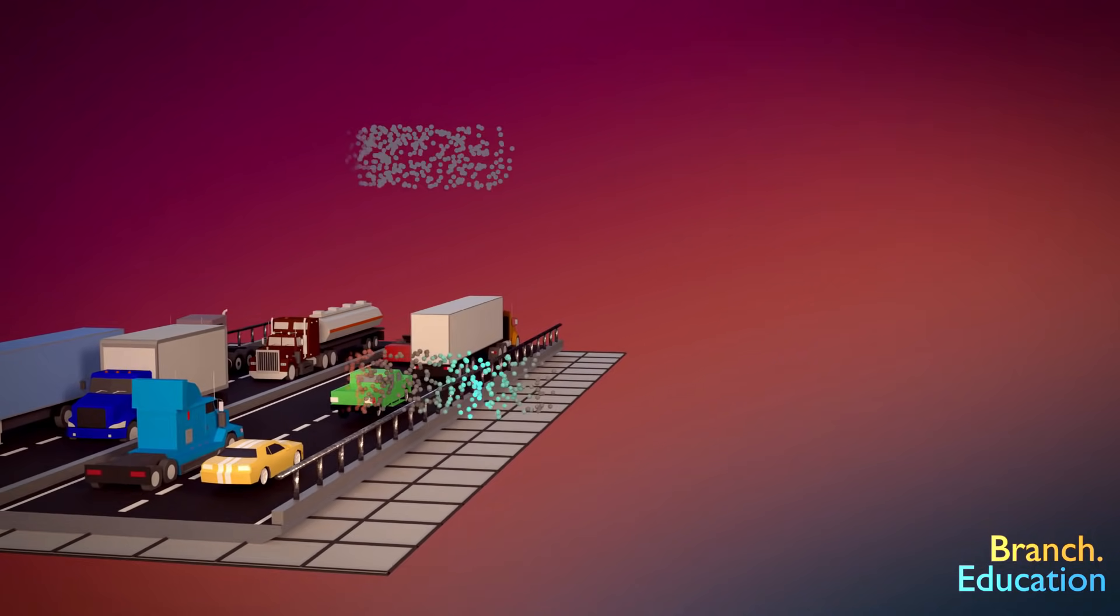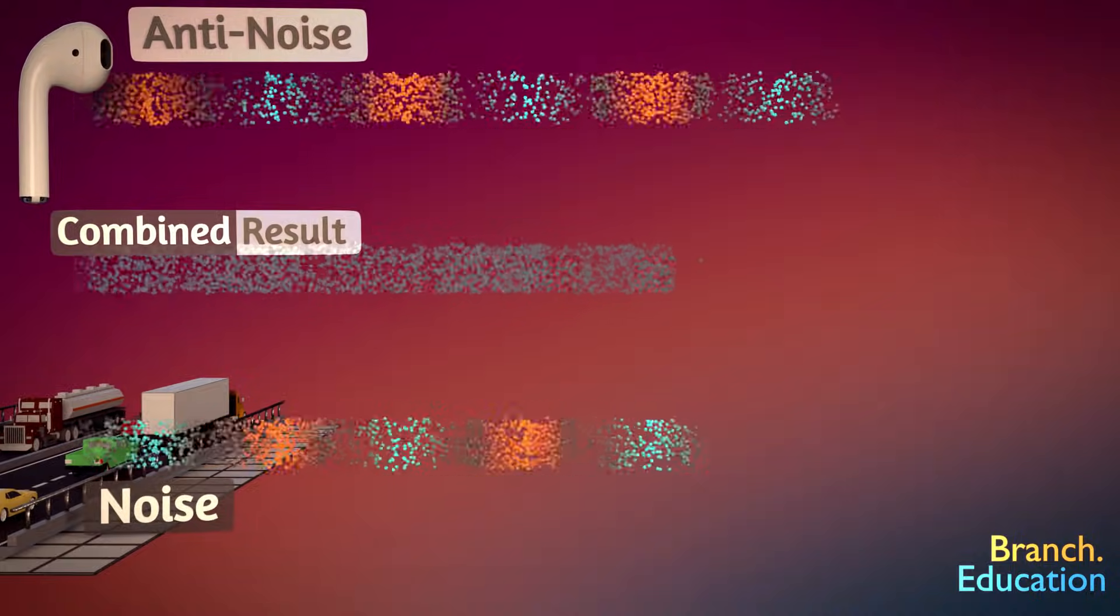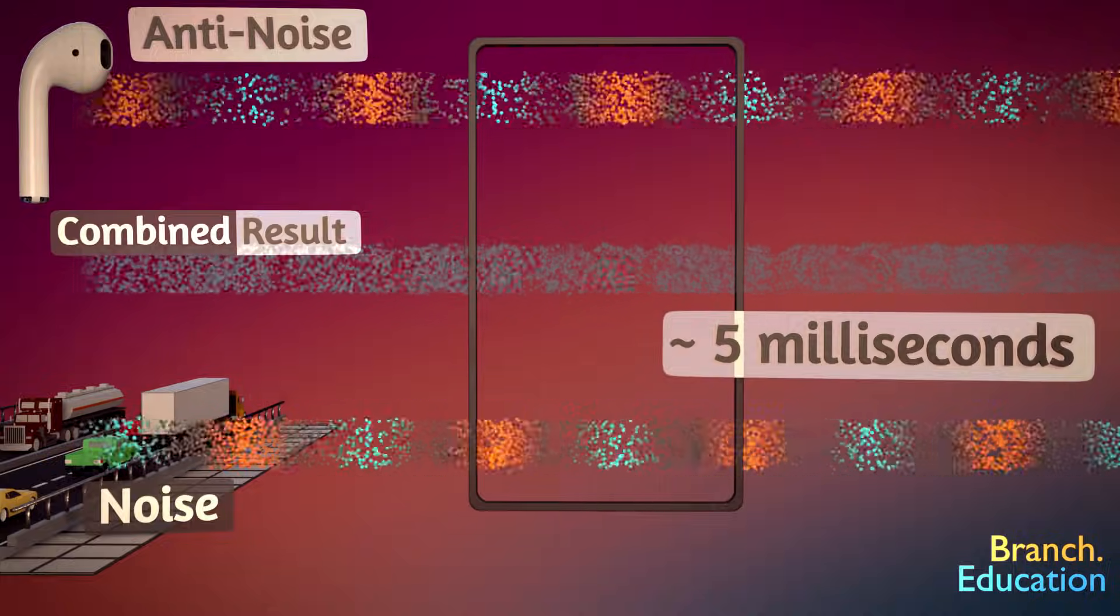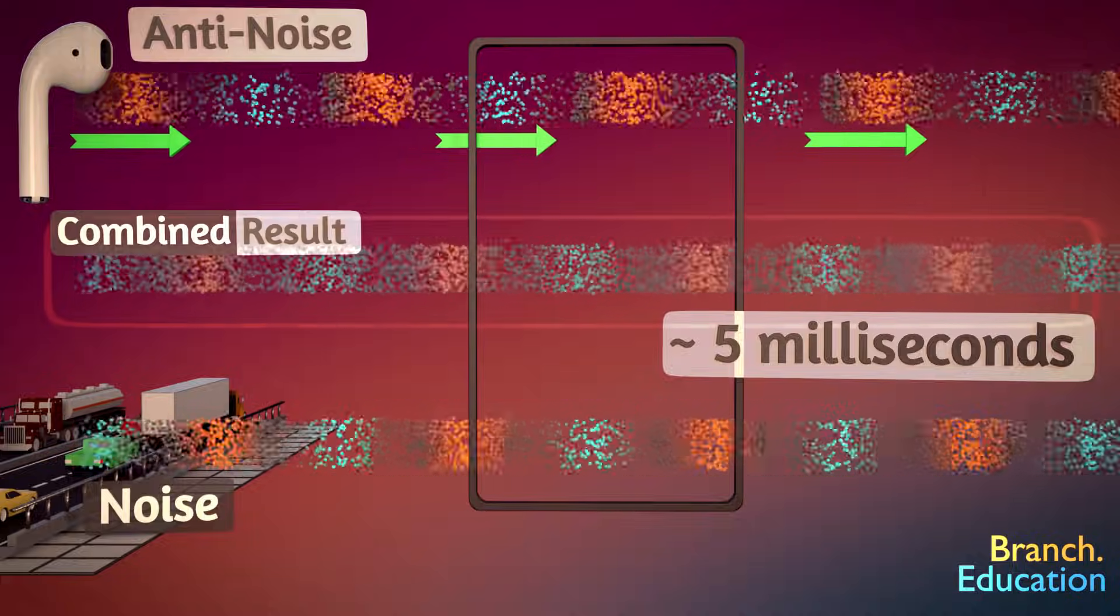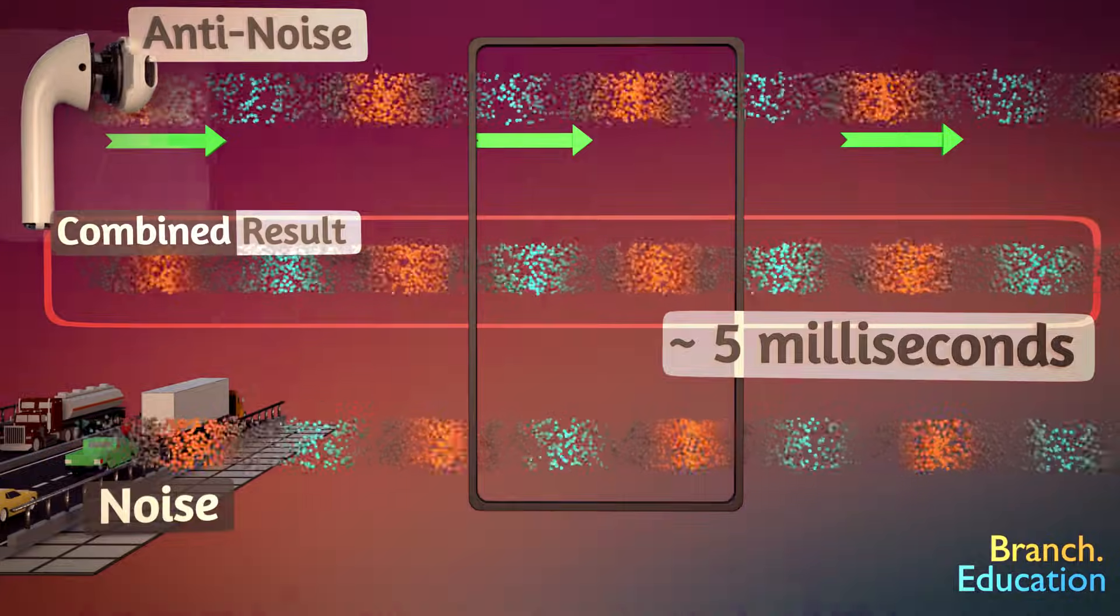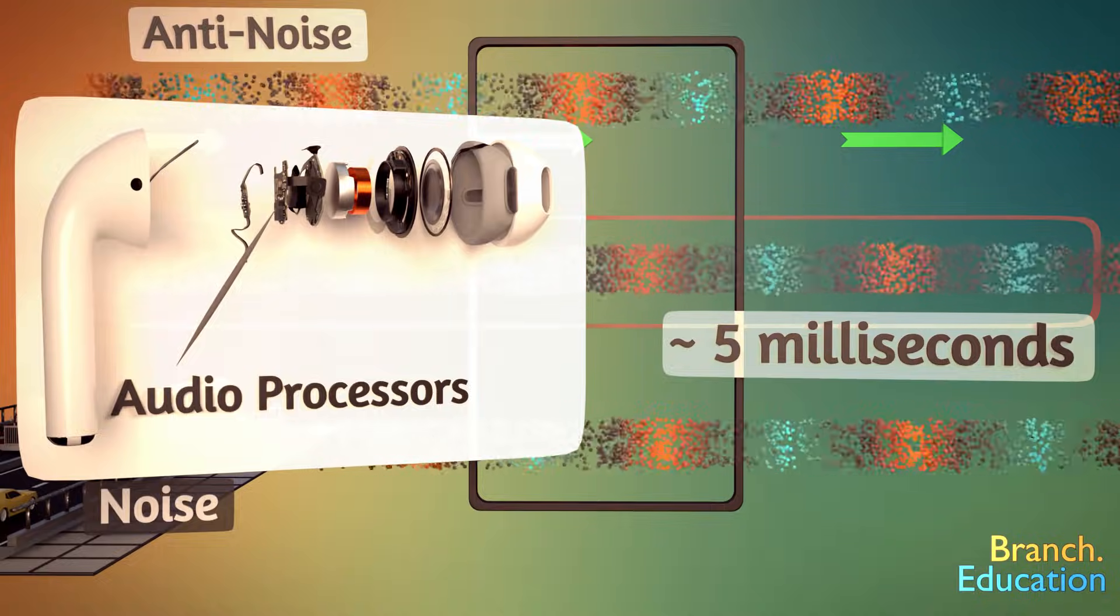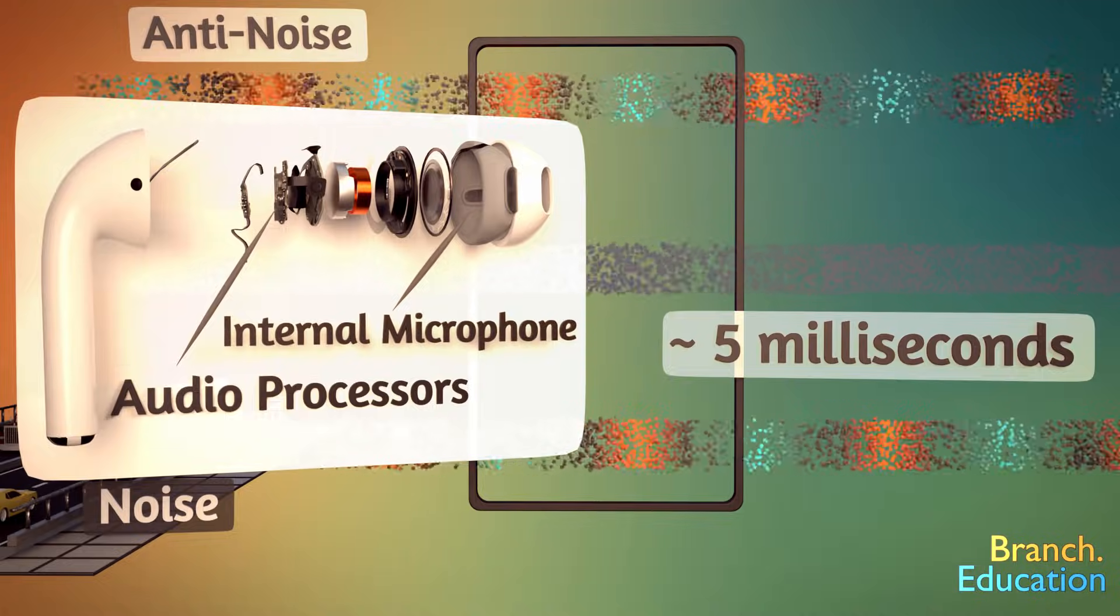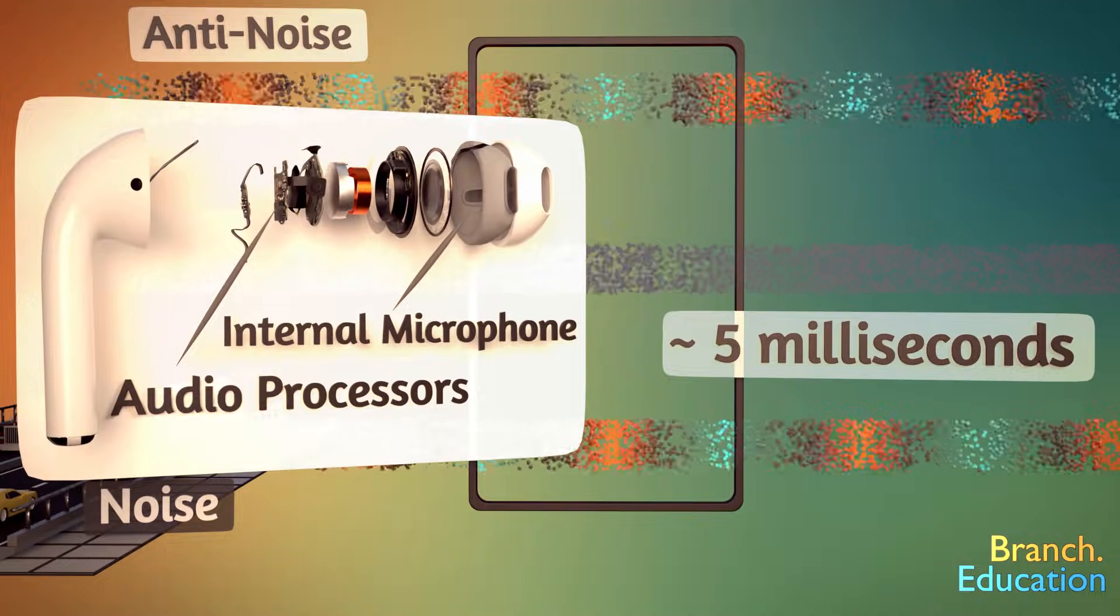The second challenge is that it's rather difficult to perfectly time the anti-sound wave with the external noise. The noise from the highway has hundreds of compressions and rarefactions every single second. So, if the anti-sound wave is off by a few milliseconds, then the noise cancellation won't work properly. Therefore, a high-powered digital processor is used to measure and calculate the perfect anti-sound wave while simultaneously the interior microphone is monitoring whether the active noise cancellation is in fact working properly.